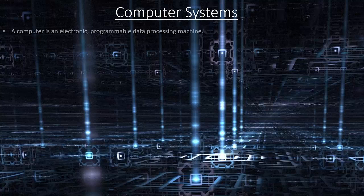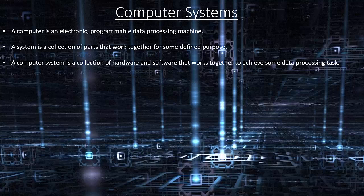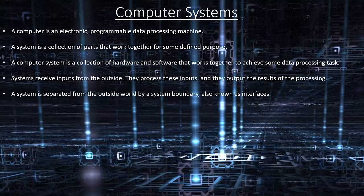Computer systems. A computer is an electronic programmable data processing machine. A system is a collection of parts that work together for some defined purpose. A computer system is a collection of hardware and software that works together to achieve some data processing task. Systems receive inputs from the outside, process these inputs, and output the results of the processing. A system is separated from the outside world by a system boundary, also known as interfaces.